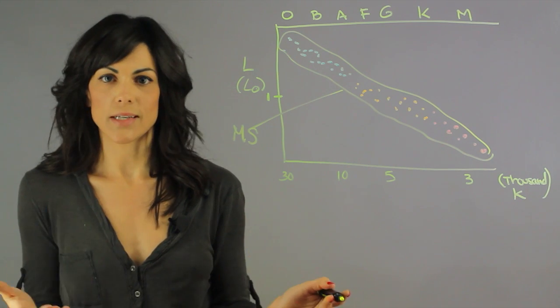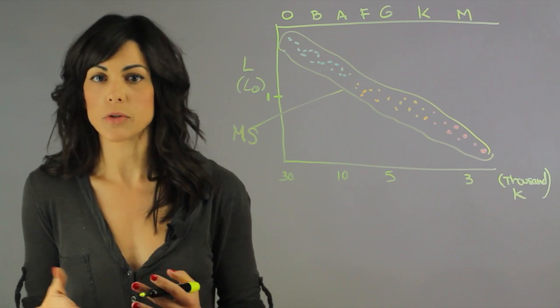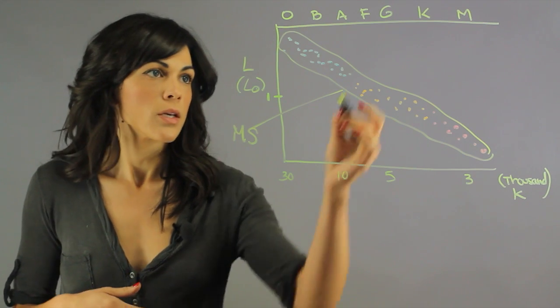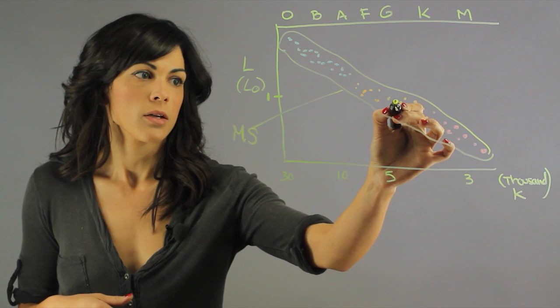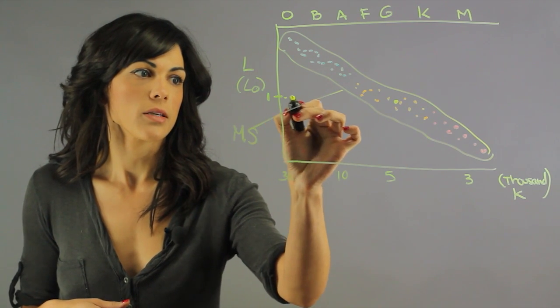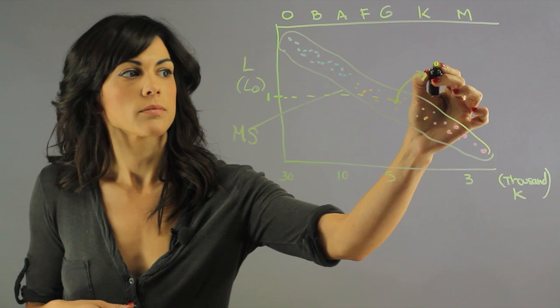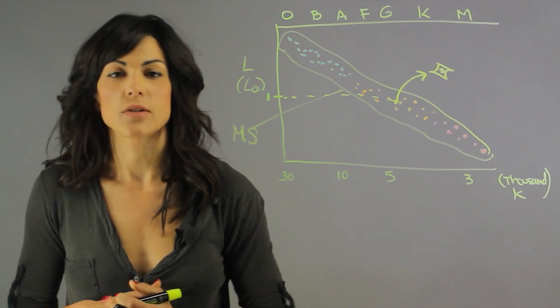Now let's try to figure out where the sun is. The sun is a G2 class star. So here is G, and it is somewhere over here, with 1 solar luminosity. Here we are. So there is our sun.